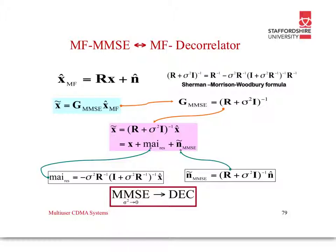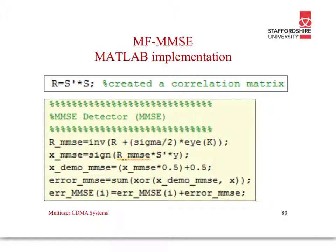Don't worry about the derivation. In MATLAB, the implementation is R-MMSE equals the inverse of R plus sigma-over-2 times the identity matrix I of K users. This will be explained in your lab session. The decision X is the sign of R-MMSE times the signature matrix times Y — that output will be ones and minus-ones, which is then converted to ones and zeros, and we compute the exclusive-OR to count the number of errors. This is the minimum mean squared error matched filter, which is more complex than the other two.